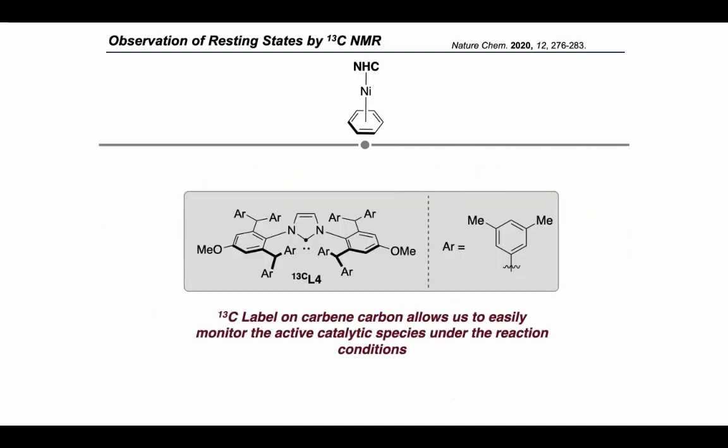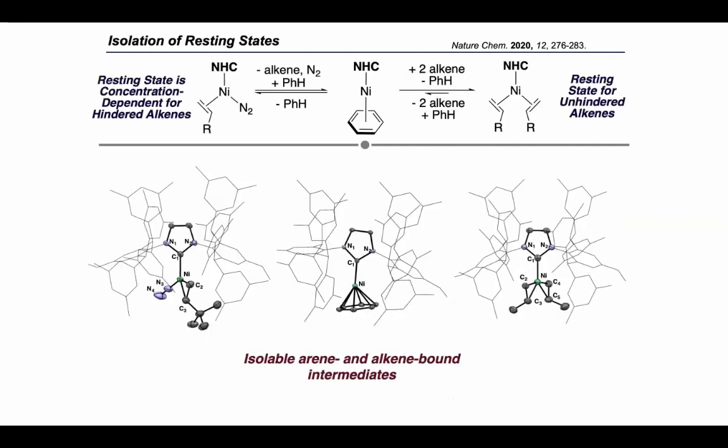To begin, we incorporated a C13 label into the carbene carbon of the NHC ligand so we could easily monitor the resting state of the active nickel catalyst under a variety of conditions by carbon NMR spectroscopy. We found that the resting state actually varies based on the identity and concentration of the alkene partner. With unhindered alkenes, the resting state is a bis-olefin complex, shown at the top right of this slide. With hindered alkenes such as t-butyl ethylene, the resting state is actually an equilibrium mixture between the η6-benzene complex and a mono-olefin complex. In all cases, we were able to observe these resting states by carbon NMR and also isolate and fully characterize them by X-ray crystallography, with the structures shown at the bottom of the slide.